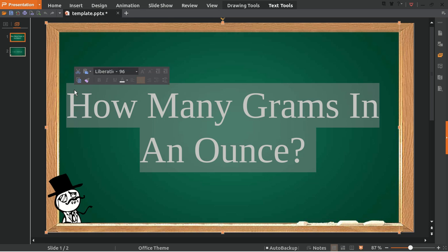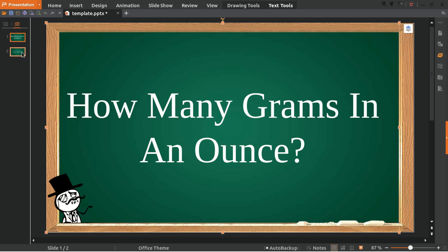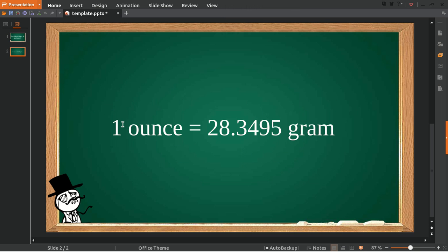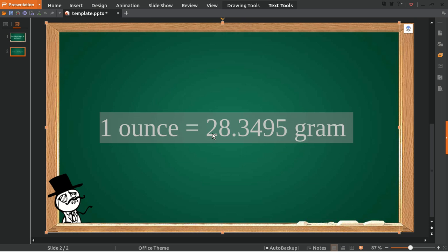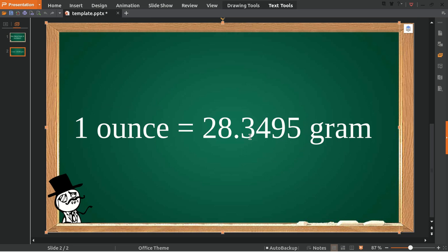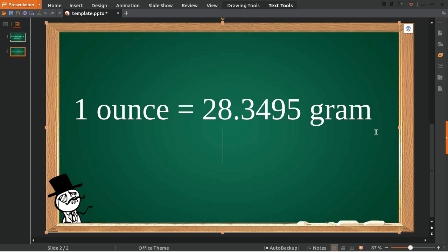Here's the answer. For one ounce, how many grams do we get? One ounce is equal to 28.3495 grams.